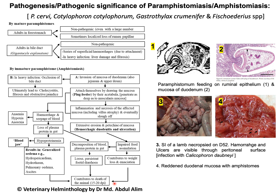Altogether, including the hyperproteinemia, this will lead to death of the animal within 15 to 20 days post infection. The immature flukes found in the small intestine can also move to the bile duct, since bile ducts open into the duodenum, and they may lead to cholecystitis, fibrosis, and obstructive jaundice.